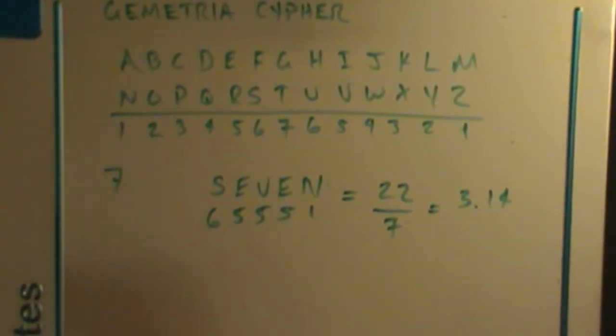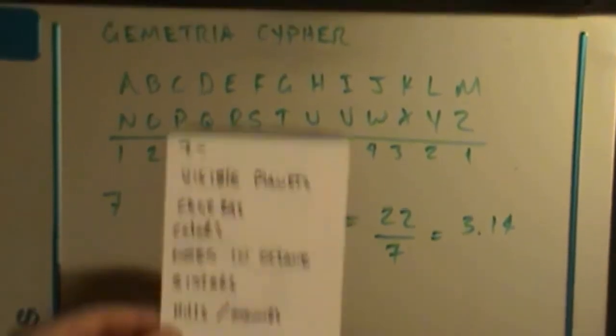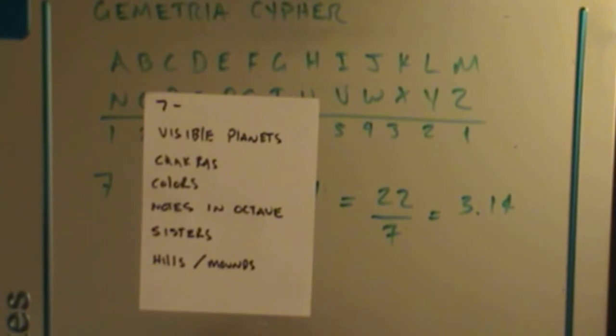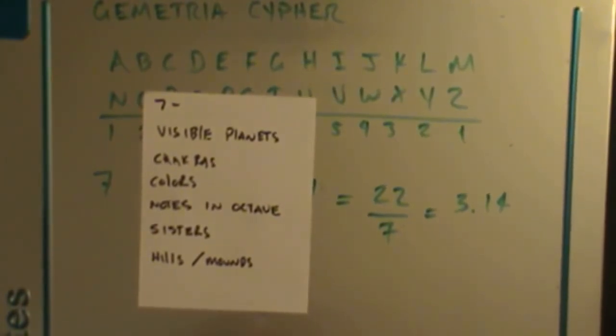And then here's just a couple of other things about seven that are pretty well known. We have seven visible planets, which actually correspond to our seven chakras. We have seven colors in the rainbow in which the human eye can see of the light spectrum. We actually have seven notes in an octave. The word octave actually means eight, but the first note is the beginning and the last note is the end. So it is an eight-step process to be in an octave, but there's seven notes in an octave.